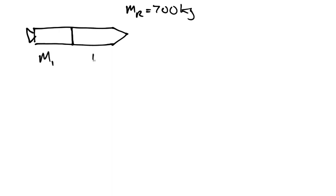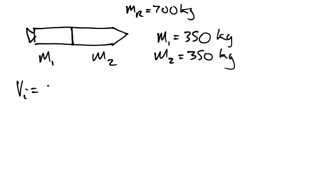What that means is, let's call it M1 and M2, and it's equal, so M1 is equal to 350, and M2 is equal to 350. Now, initially, the rocket is going at a speed. The initial velocity is 6.2 times 10 to the power of 3 meters per second, and that speed is with respect to the Earth.